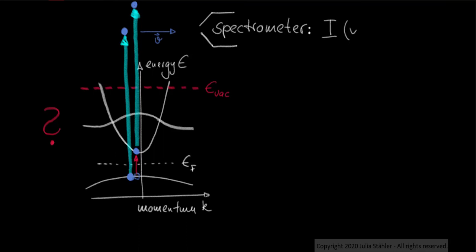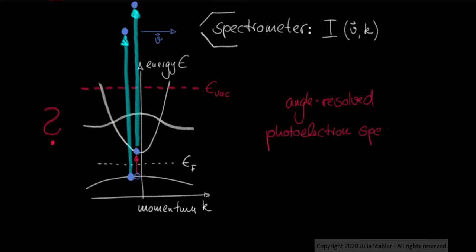As we resolve the intensity of photoelectrons as a function of energy and emission angle, this technique is called angle-resolved photoelectron spectroscopy.